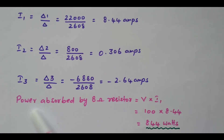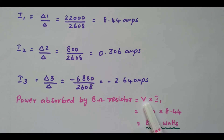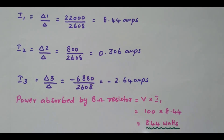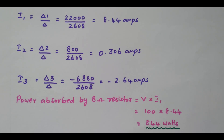We have one more question: the power absorbed by the 8-ohm resistor. Power = V × I. The voltage near the 8-ohm resistor is 100 V, and the current flowing through it is I1 = 8.44 A. So power = 100 × 8.44 = 844 watts. The same problem solved by the equation method is available via a link in the description box. In this problem, we solved by the matrix method: I1, I2, I3 were calculated, and the power absorbed was also calculated. Thank you.